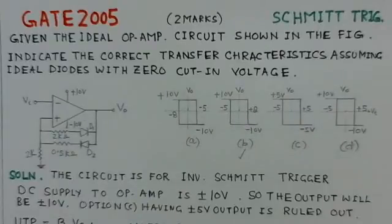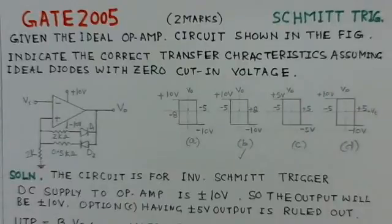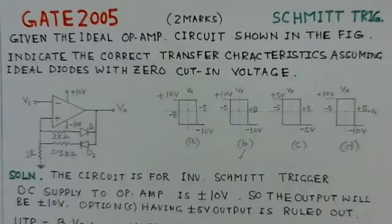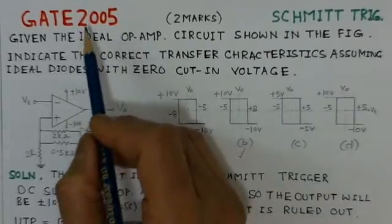After uploading the video on operational amplifier switching applications part 3, some related GATE problems are taken up for video solutions. The problems are from GATE 2005, 2008, and 2003. The first two problems are on the Schmitt trigger and the third one is on voltage comparators. We start with the first problem, which is of GATE 2005.